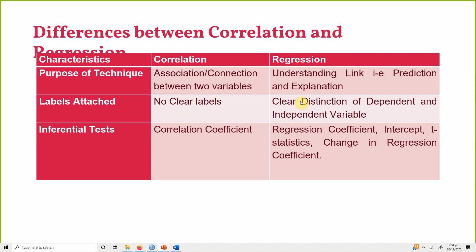Whereas in regression there is a clear distinction of what your dependent variable is and what your independent variables are. The inferential test in correlation is your correlation coefficient, which tells you about the strength of relationship between the variables, whereas in regression you have your regression coefficient, your intercept, and your t-statistics.